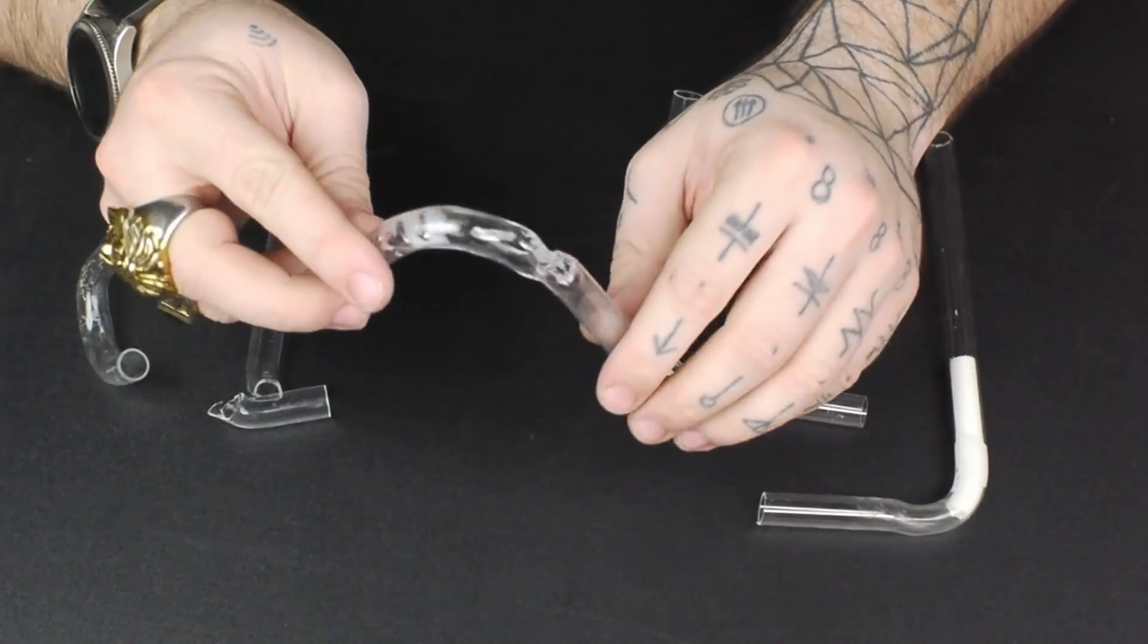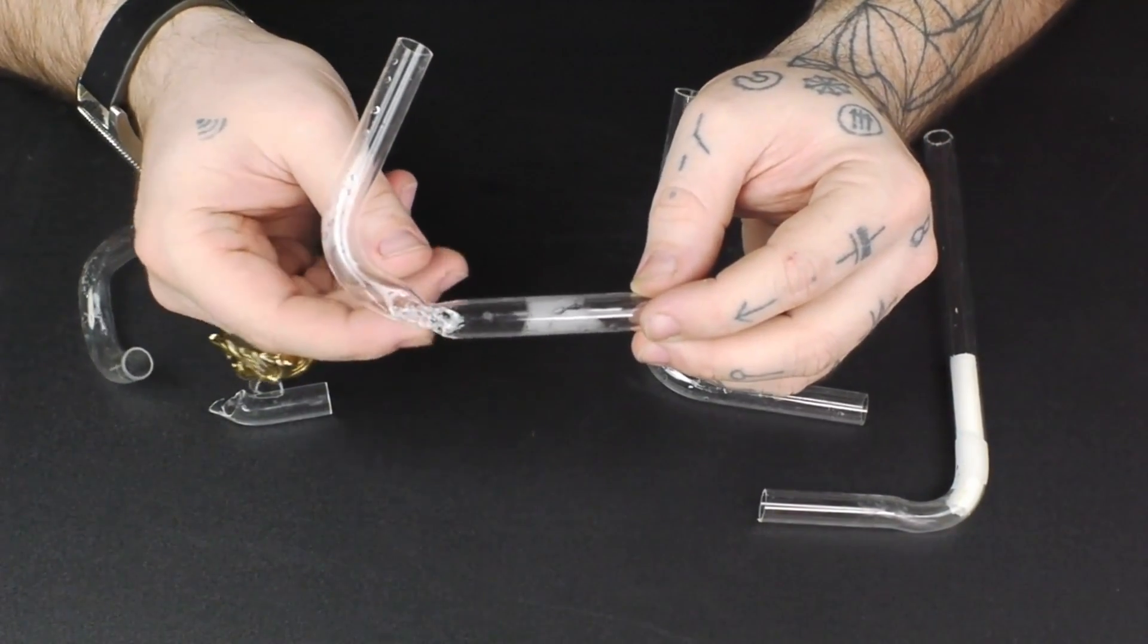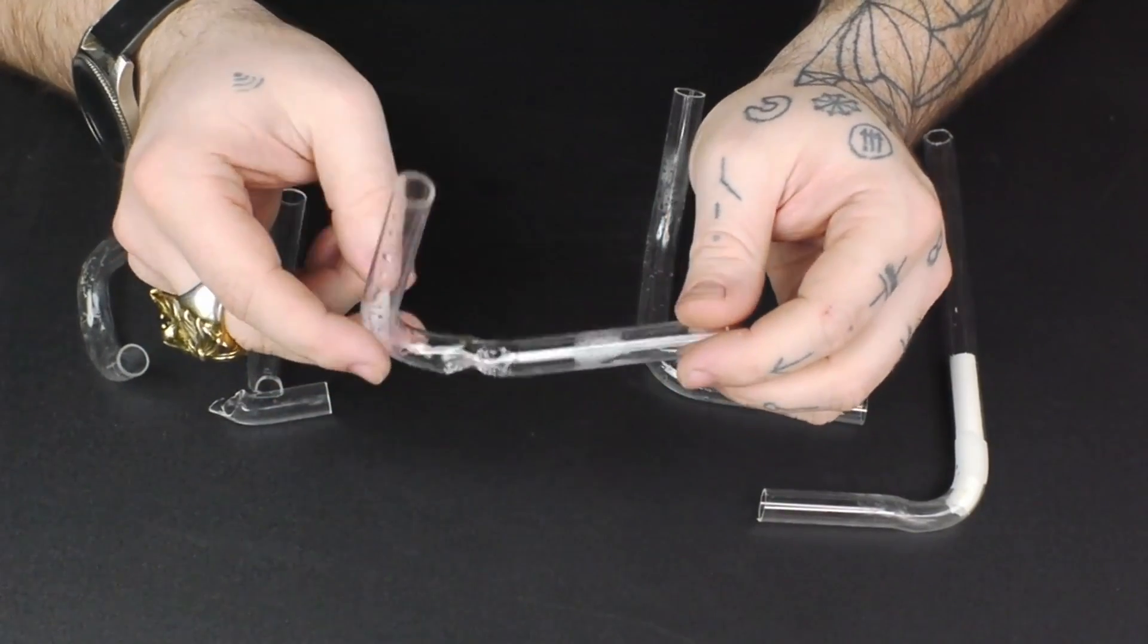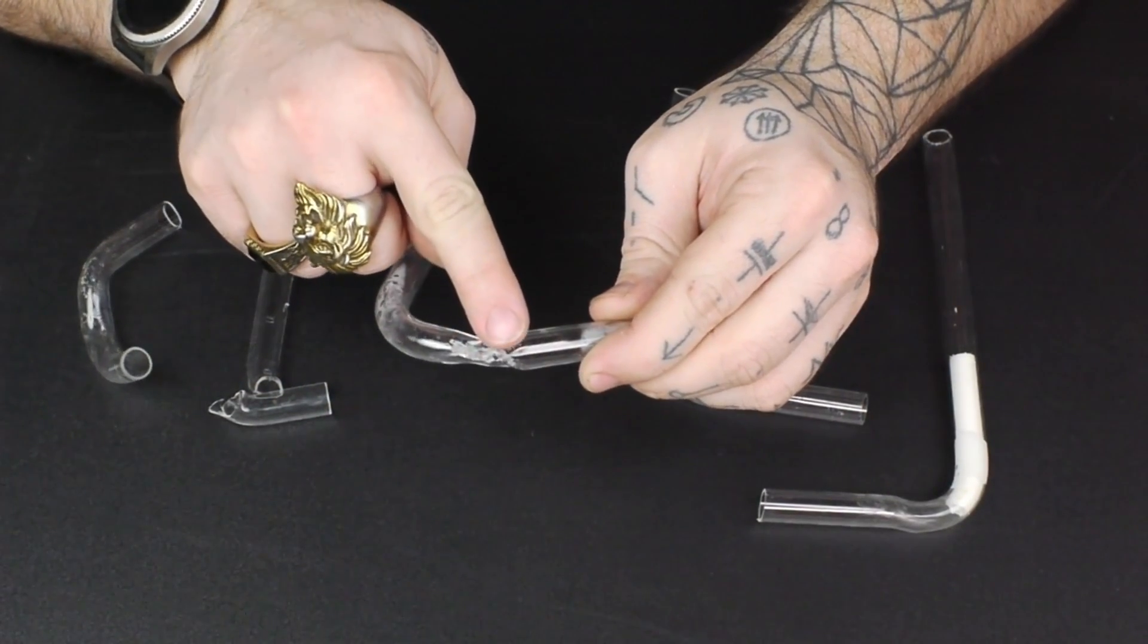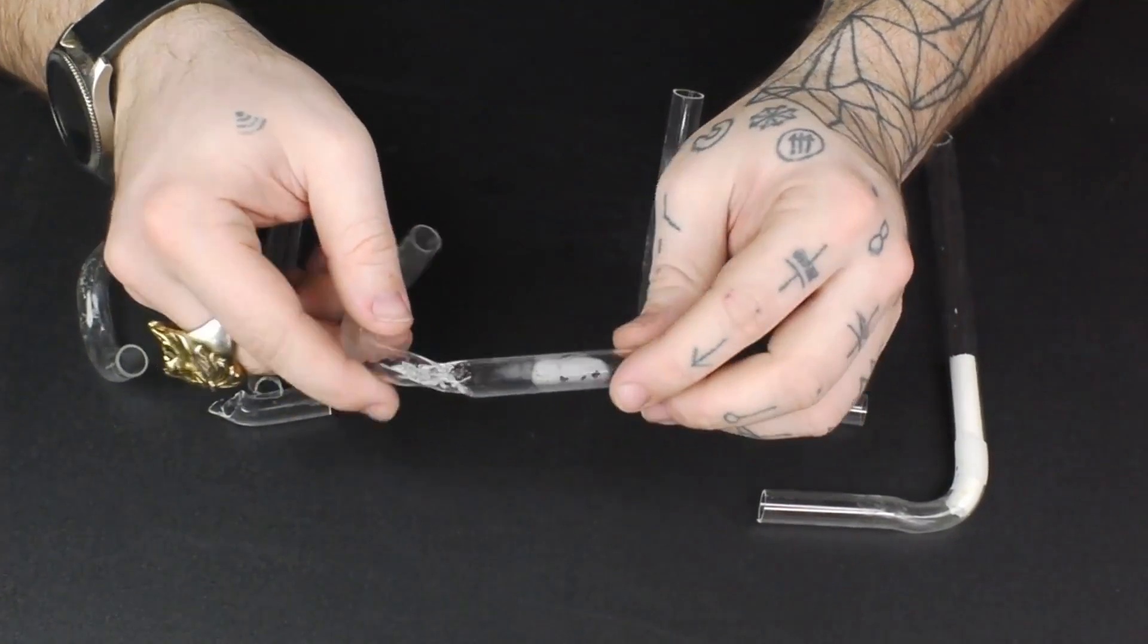Next attempt, the 90 went perfectly. When I went to do the 45, I just got it way too hot and just put all these little bubbles in the plastic. You don't want that because it weakens the tubing, and also it just looks ugly.